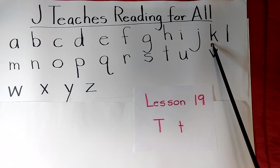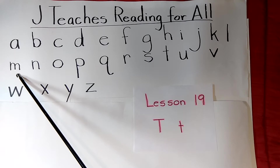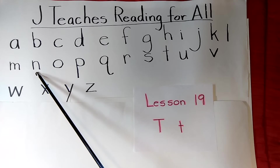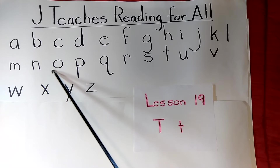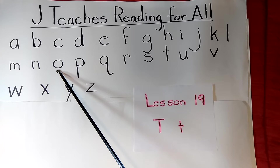K — K, kite. L — L, lamp. M — M, mountain. N — N, nut. O — two sounds: O, octopus; O, ostrich.